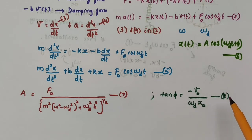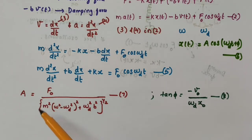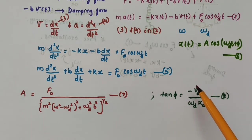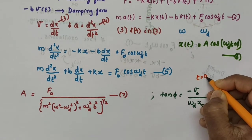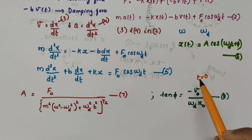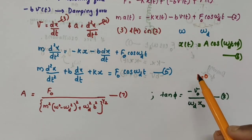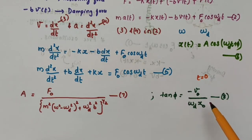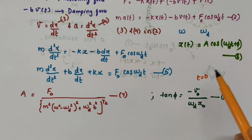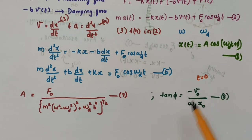The phase constant phi is given by tan(phi) = −v0 / (omega_d · x0), taken as equation number 8. Here, v0 is the velocity of the particle at time t = 0, the moment we apply the periodic force, and x0 is the displacement of the particle at t = 0.